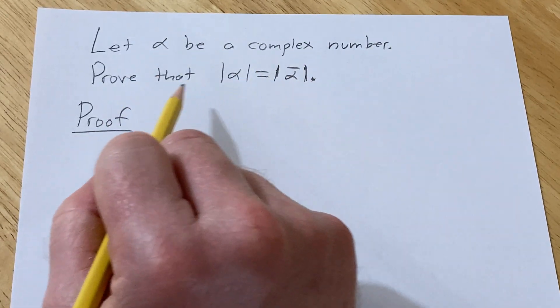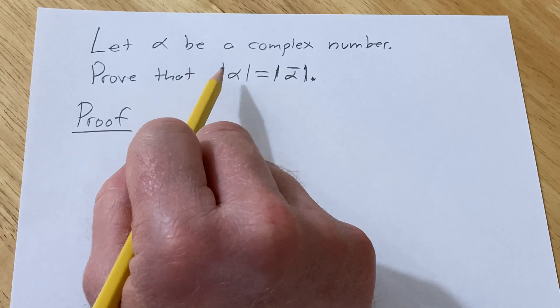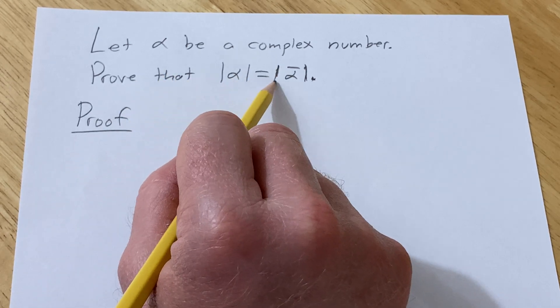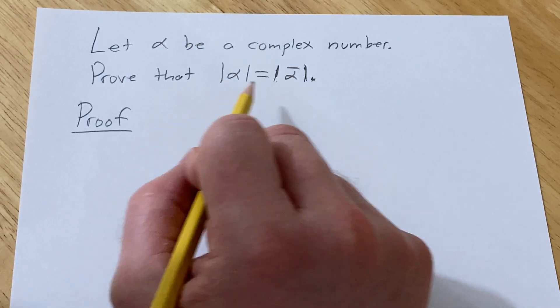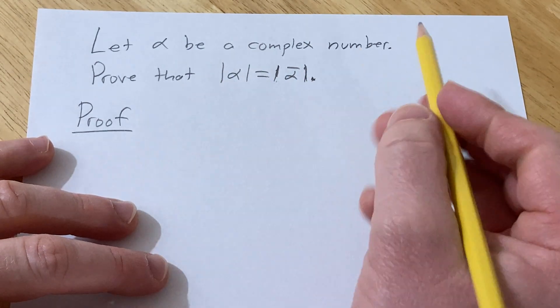Let alpha be a complex number. We have to prove that the absolute value of alpha is equal to the absolute value of the conjugate of alpha. This is also called the modulus, so let me just refresh your memory on what all of this means.